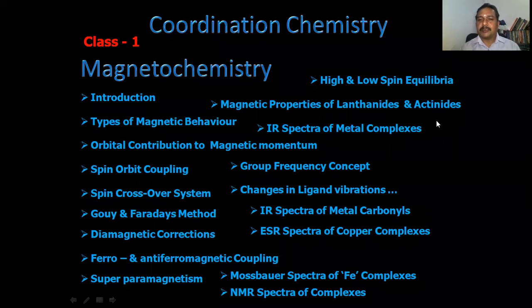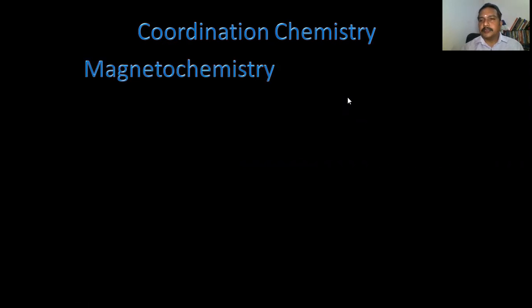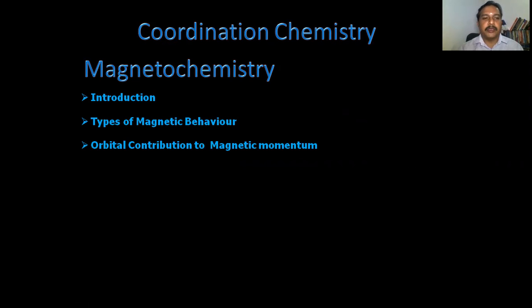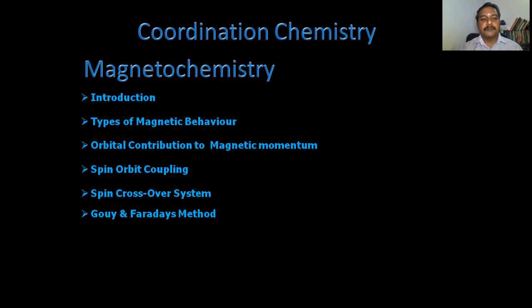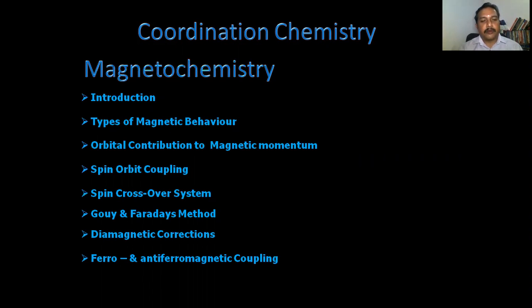Hi, I'm Dr. Prasad Puteelam. I'm handling classes for coordination chemistry — class number one, based on magnetochemistry and magnetic properties of coordination compounds. The class covers: introduction to coordination chemistry, types of magnetic behavior, orbital contribution to magnetic momentum, spin-orbit coupling, spin crossover systems, Gouy's method, and Faraday's method of determining magnetic susceptibility, diamagnetic corrections, ferro and anti-ferromagnetic coupling, and superparamagnetism.